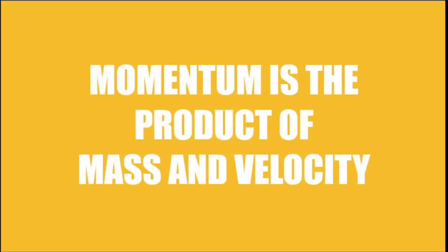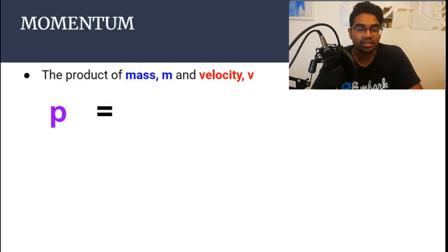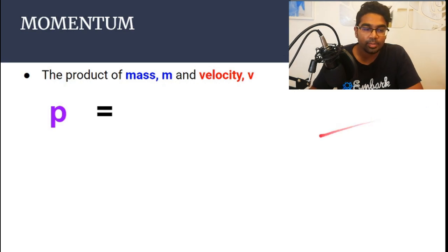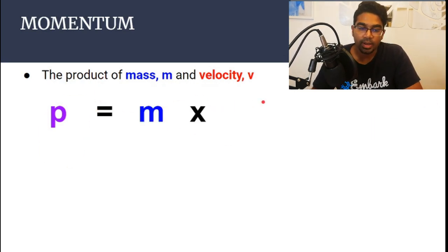So, what is momentum? Momentum is the product of mass and velocity. Now what does that mean? In an equation, momentum is represented by p and the product means mass multiplied by velocity, and that is the simple definition of momentum.